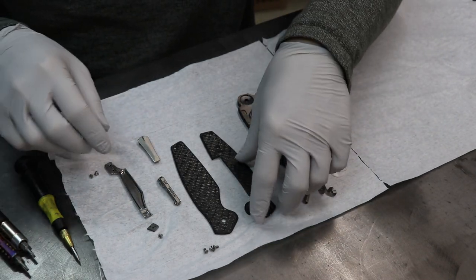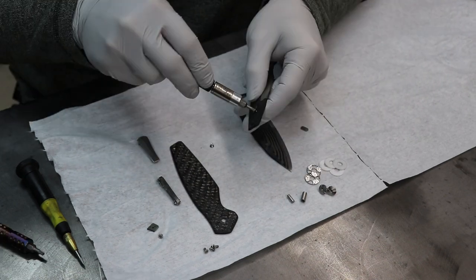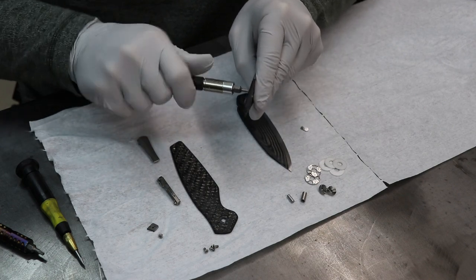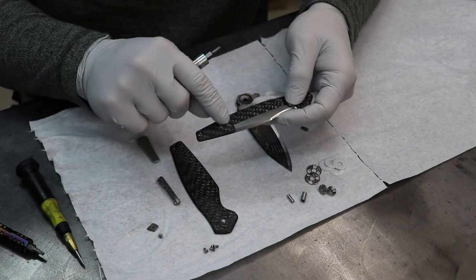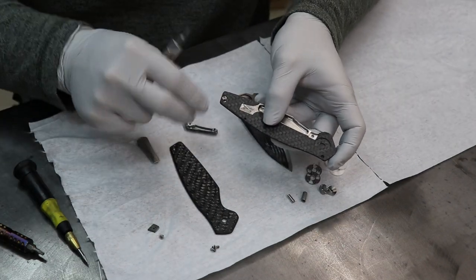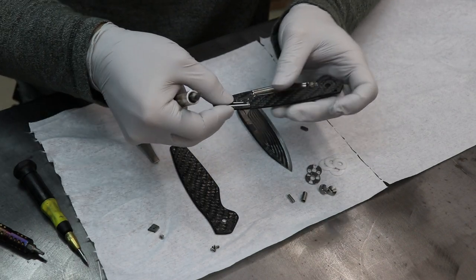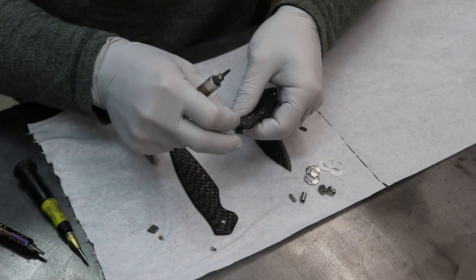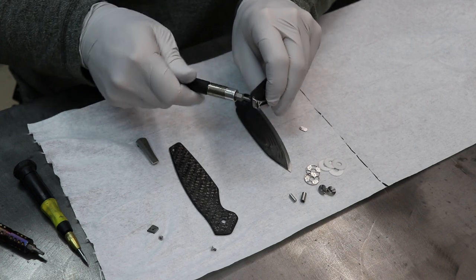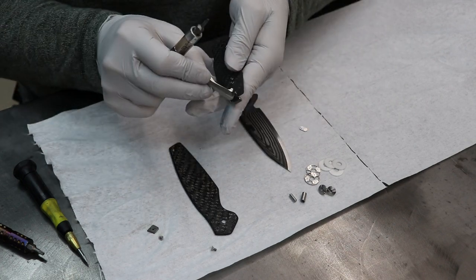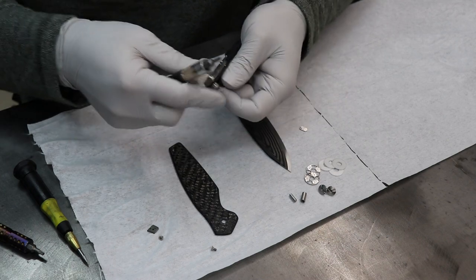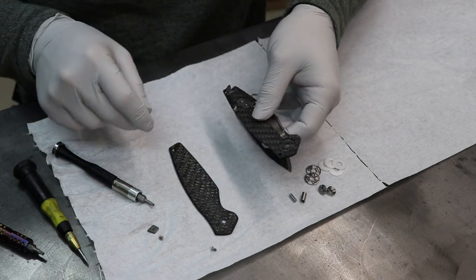Install the lock bar. All these screws get torqued down to four inch pounds. On the final assembly I'll put Loctite on them to make sure they don't back out. This one's a little bit interesting. Got to put that screw in first, then put this back spacer on, then put the back spacer screw in, and then the pocket clip. There's our sub assembly.